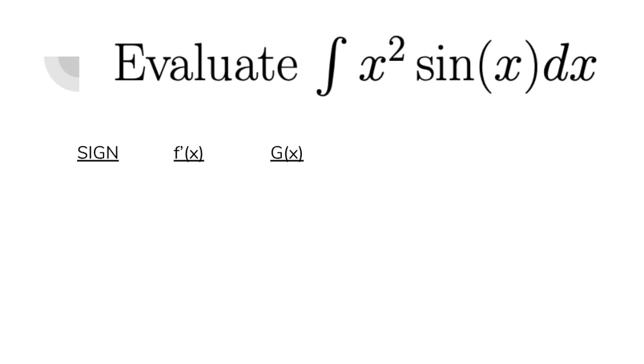So think of f of x as, in this case, x squared, and g of x as sine of x. We're going to repeatedly take the derivative of the x squared function, which is the f prime in this case, and we're going to repeatedly take the integral of sine of x, which is g of x in this case.